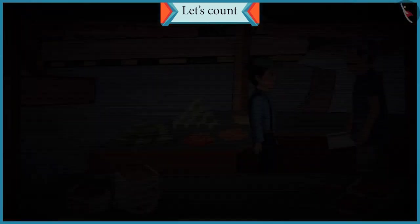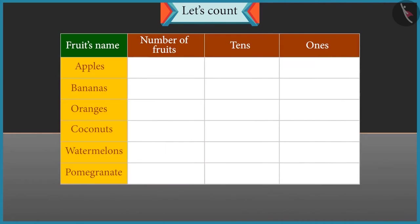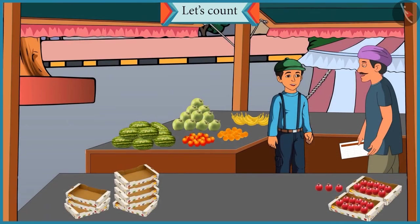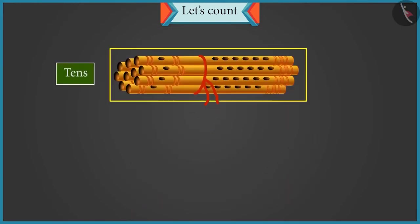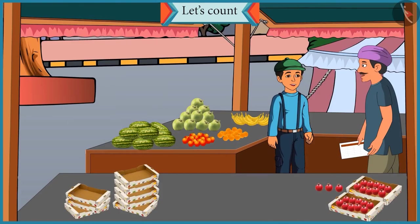Chotu, look. Different varieties of fruit are kept here. You have to count the fruits and tell their number. You also have to tell how many groups of 10 are there in each, so that we can count them easily. Uncle, a group of 10 means tens. In school our teacher taught us that a group of 10 is called tens and less than 10 are called ones. Okay Chotu, so you count the fruits and tell me how we can show them in tens and ones. Okay Uncle.